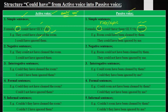Negative sentences are those in which we deny, reject, or refuse the statement. For example: 'They could not have cleaned the room' becomes 'The room could not have been cleaned by them.' And 'I could not have ignored them' becomes 'They could not have been ignored by me.'